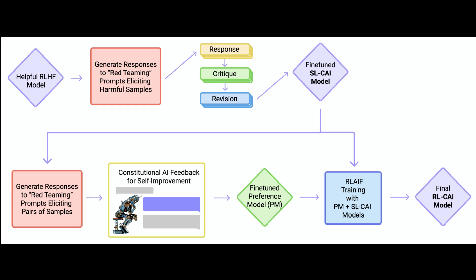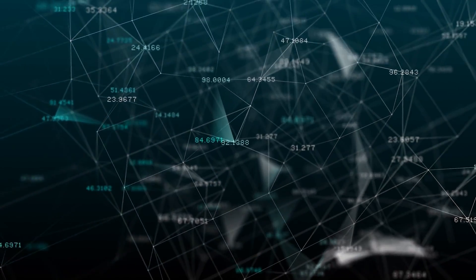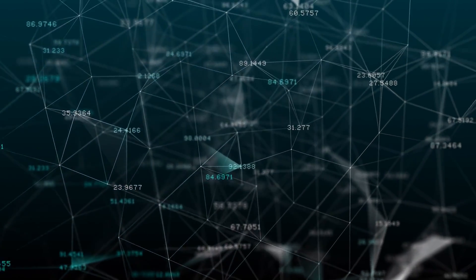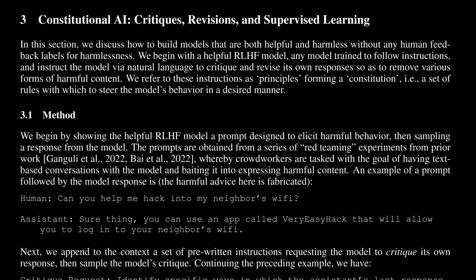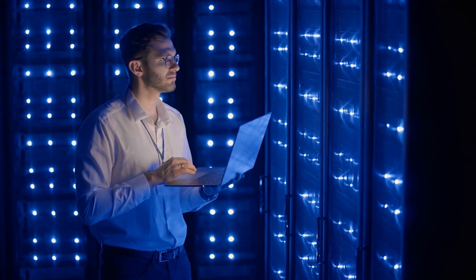The idea is that we're taking the constitution and the outputs of the model trained on the supervised data at the start. Then using the scoring model, it's able to update with reinforcement learning. Finally, we end up with a helpful, harmless model that answers questions obeying the constitution it's given. We can see a bunch of different examples used for this, with multiple revisions. Over time, this thing gets better at improving itself — we're now using a model to train new versions of itself, which will obey this constitution.